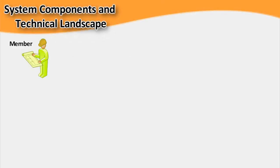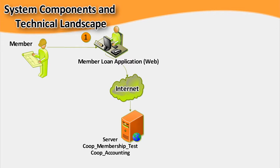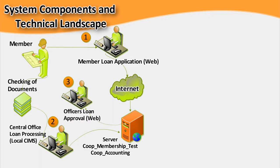Co-op members can apply for loans via the SIMS website through the internet. These loan transactions will be forwarded to the cooperative server. The member will then pass the requirements to the cooperative admin for completion, and the admin will process the loans and forward them to the assigned loan approver.